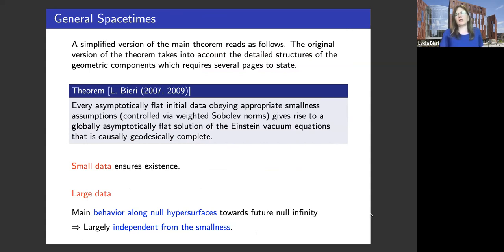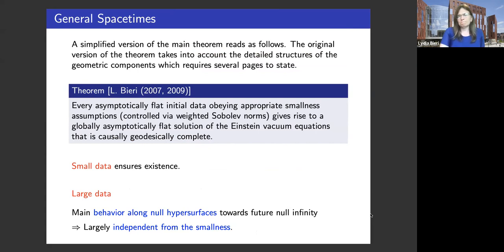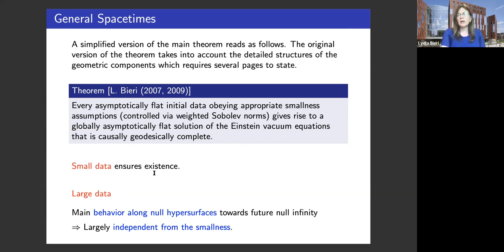Let me cite my own result briefly. In a more general setting, I showed that if you have data decaying very, very slowly — which will be made precise shortly — you still have relaxed data decaying very slowly to Minkowski, and yet you can produce a global solution which is asymptotically flat with no singularities. Why is this important? The small data ensured existence, but you can actually go to large data and find that many of the results — especially the very precise decay estimates that come out of these proofs — are still true. The behavior along null hypersurfaces is really independent of the smallness.